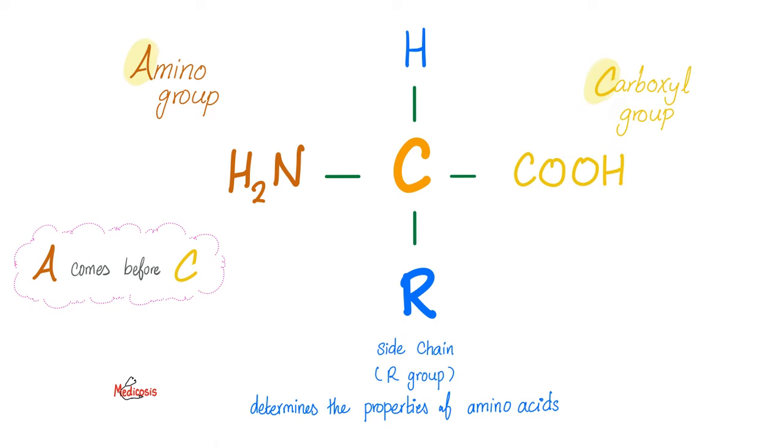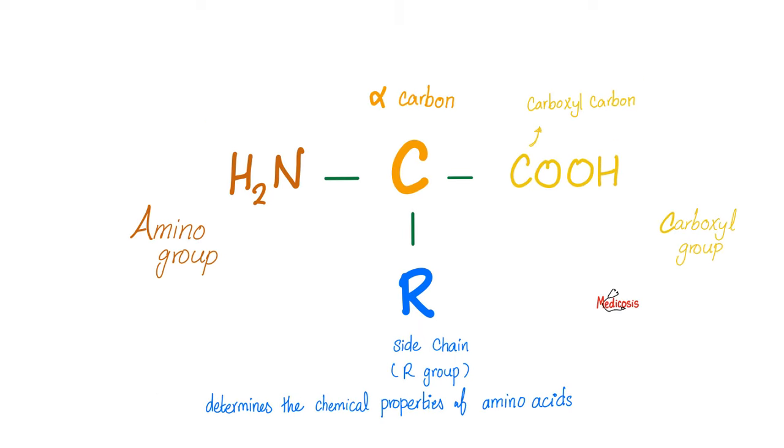Pause and review. Since we say amino before the acid, since A comes before C, you start with the amino and then the acid. This order matters. Who determines the chemical properties of the amino acid? The R group, the side chain.